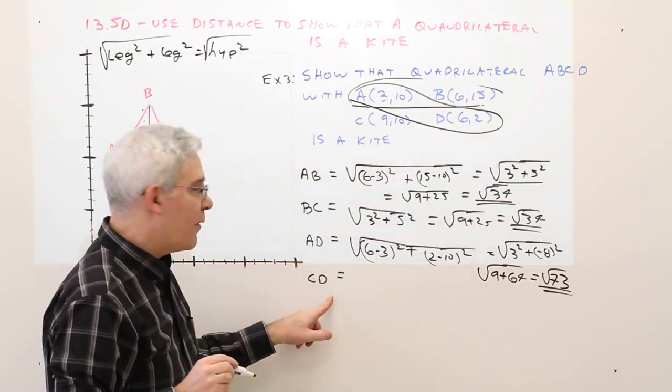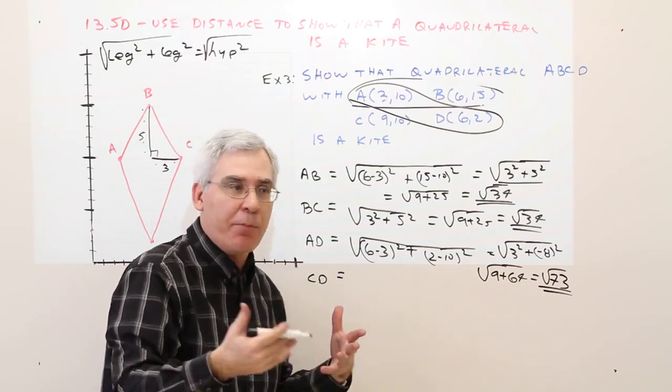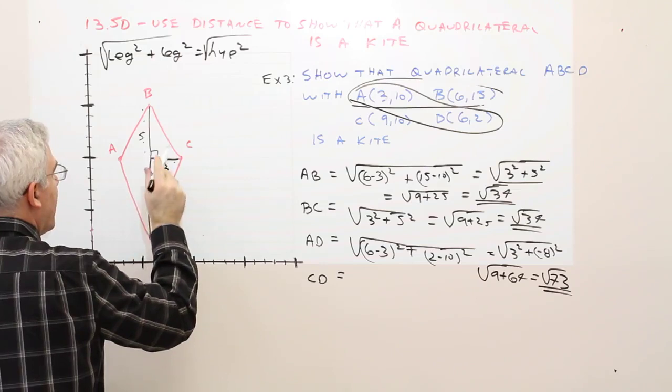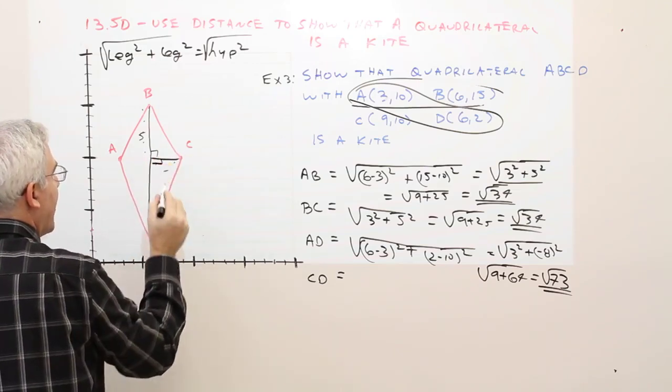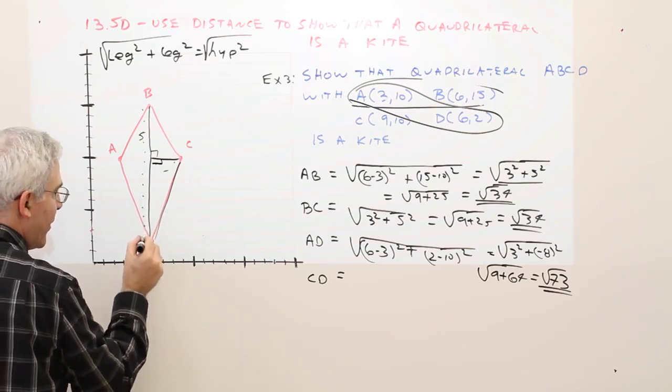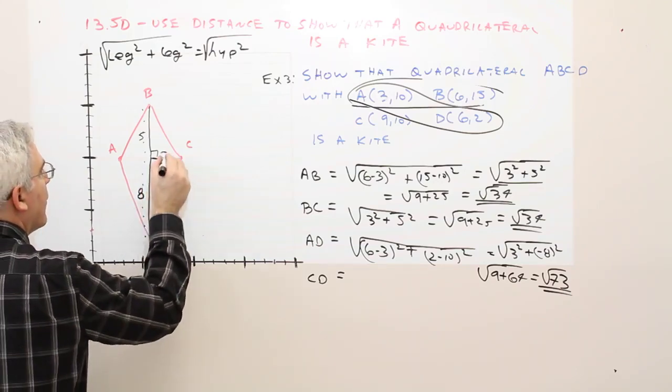For CD, I'll do it by the Pythagorean theorem. So I'll construct a right triangle like such: 1, 2, 3, 4, 5, 6, 7, 8. This was 3.